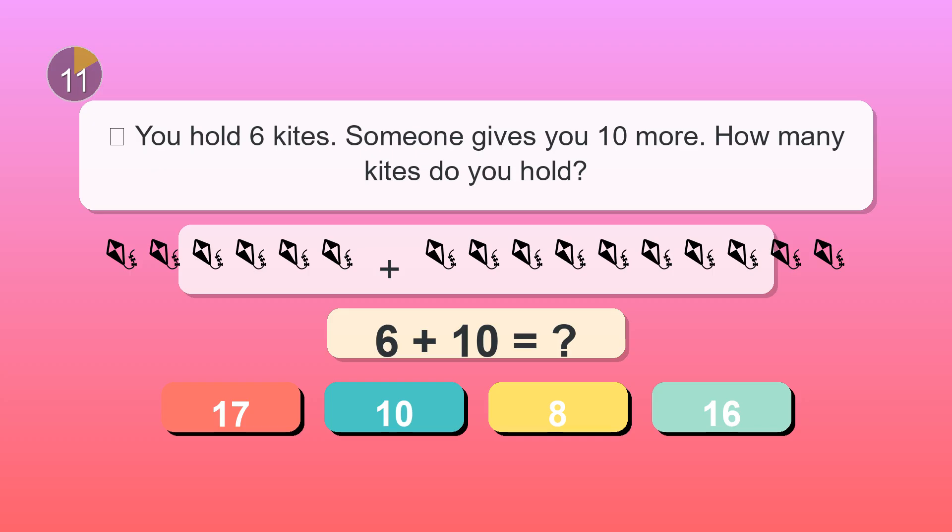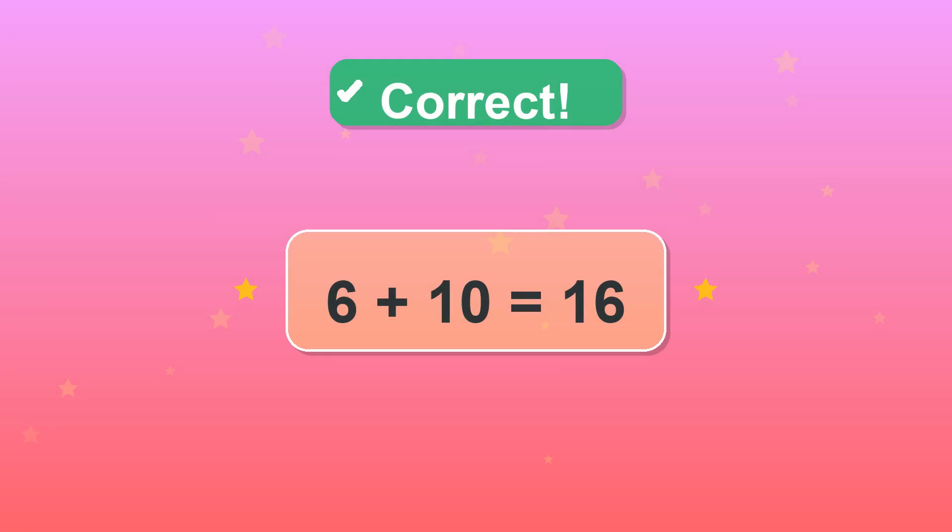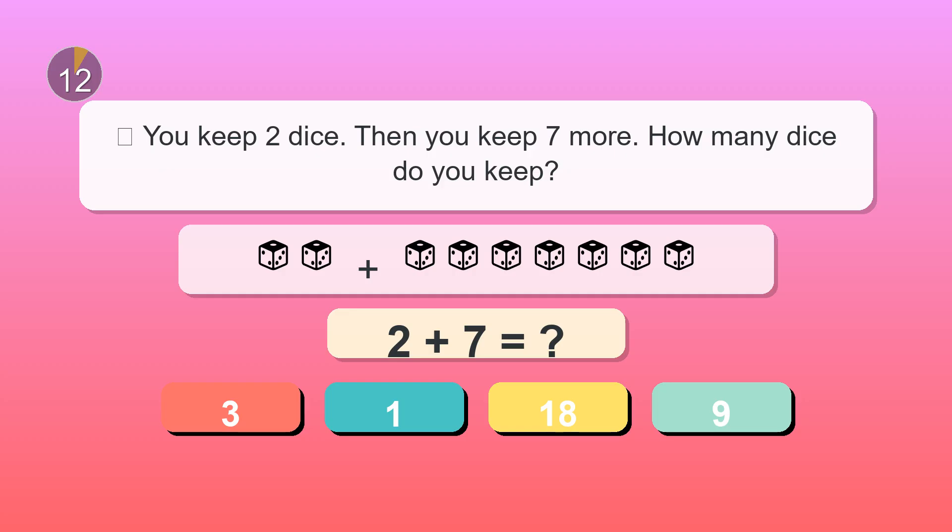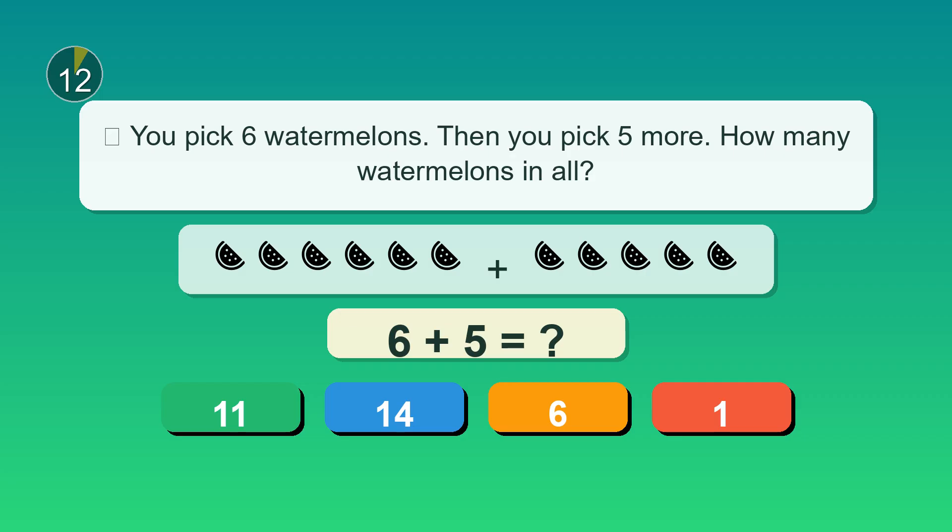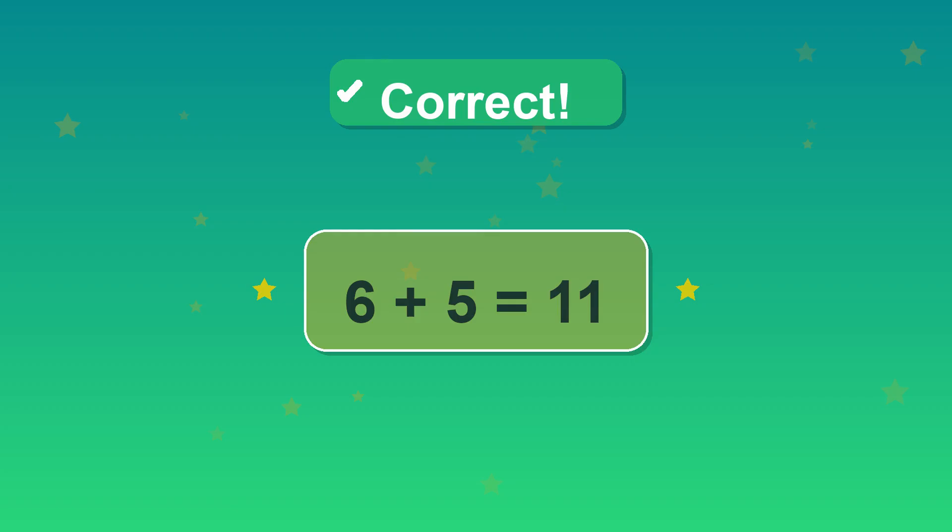You hold six kites. Someone gives you ten more. How many kites do you hold? 16. Awesome. You keep two dice. Then you keep seven more. How many dice do you keep? Nine. Smart. You pick six watermelons. Then you pick five more. How many watermelons in all? 11. Nailed it.